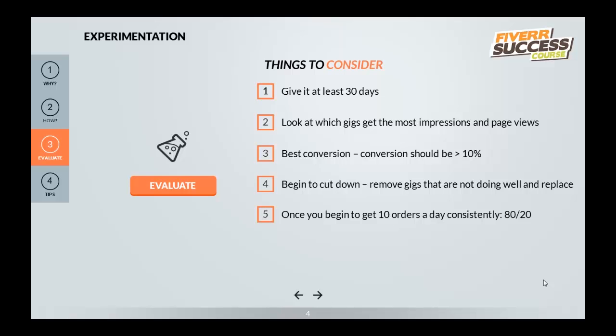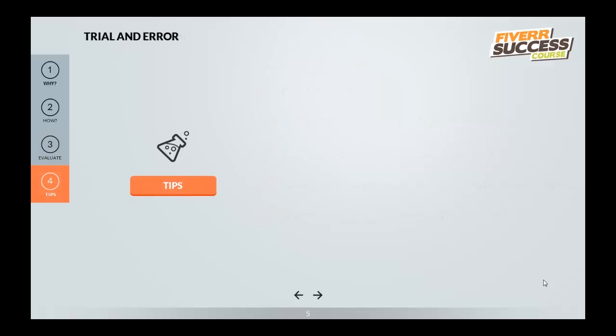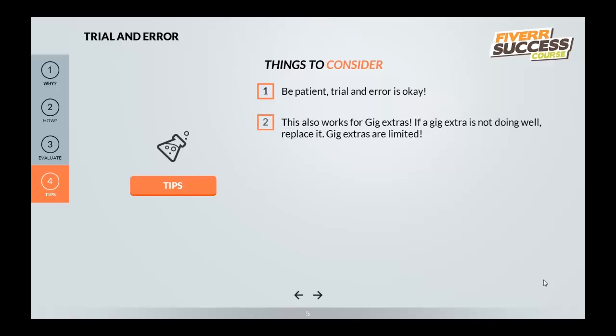Here are some tips when it comes to trial and error and experimentation. The first thing is: be patient. Trial and error is okay. It's okay if you're failing in the beginning, it's okay if no one's buying your gigs at first — it's all a process. Sometimes it happens overnight, sometimes it doesn't, and that's okay. There's potential and there's room enough for every seller to make some money on Fiverr.